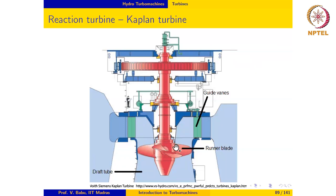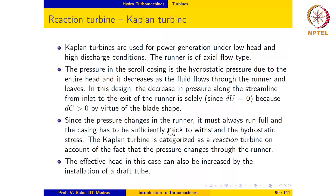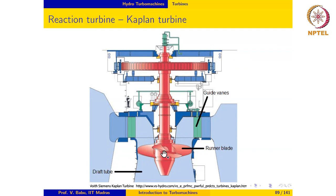v-theta is very high near the hub of the blade and lesser near the tip. In addition to this, the blade speed u also varies from the hub to tip in direct proportion to the radius, since u equals r times omega. These two facts together result in the blade being highly twisted from hub to tip.